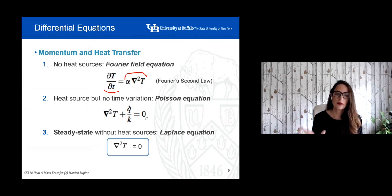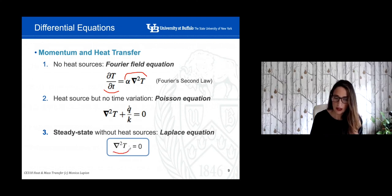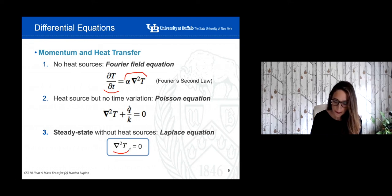The third case simplifies further: there is no dependence with time and no heat sources, so the temperature only depends on position. This is called the Laplace equation — the simplest situation we can have.